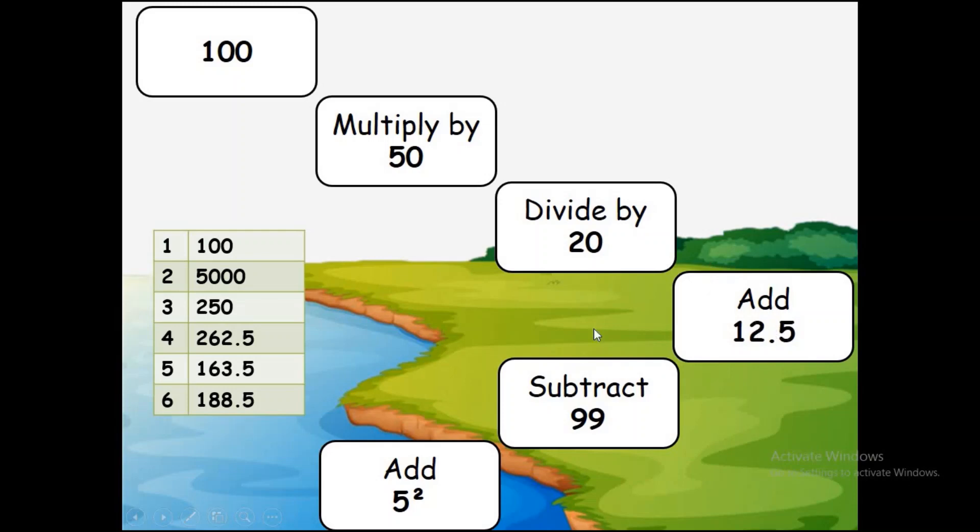250 add 12.5 gives us 262.5. Then 262.5 take away 99 - we know that we can take away 100 and then add our 1 because that is what 99 is - so it's 163.5. And then 5 times 5 is 5 squared, so we're going to add 25 and you're going to end up with 188.5.